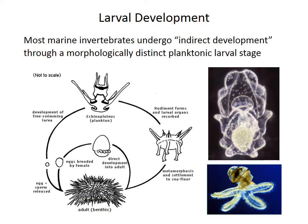Although some marine invertebrates are direct developers, where the fertilized embryo develops to a juvenile that resembles a miniature version of the adult, most undergo indirect development and have a separate planktonic larval stage. That larva may resemble the adult, as in the gastropod in the lower photo. Others, however, look completely different from the adult, like the upper picture of a sea urchin larva.